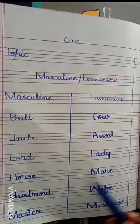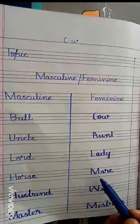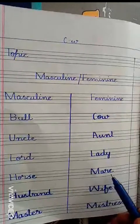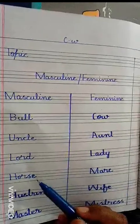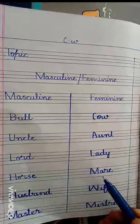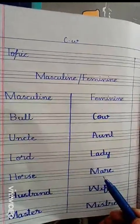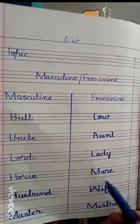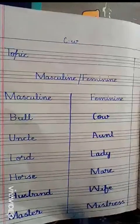Next is Horse — H-O-R-S-E. Its female is Mare — M-A-R-E. Jis ko ghori kehtay hain. Ghora hota hai na mail mein, to female agar hai ghora to ghori.